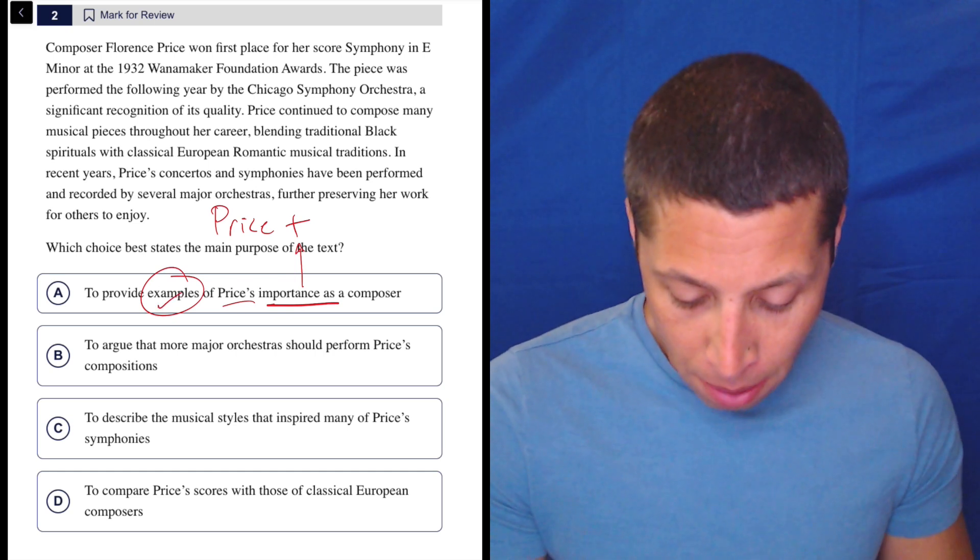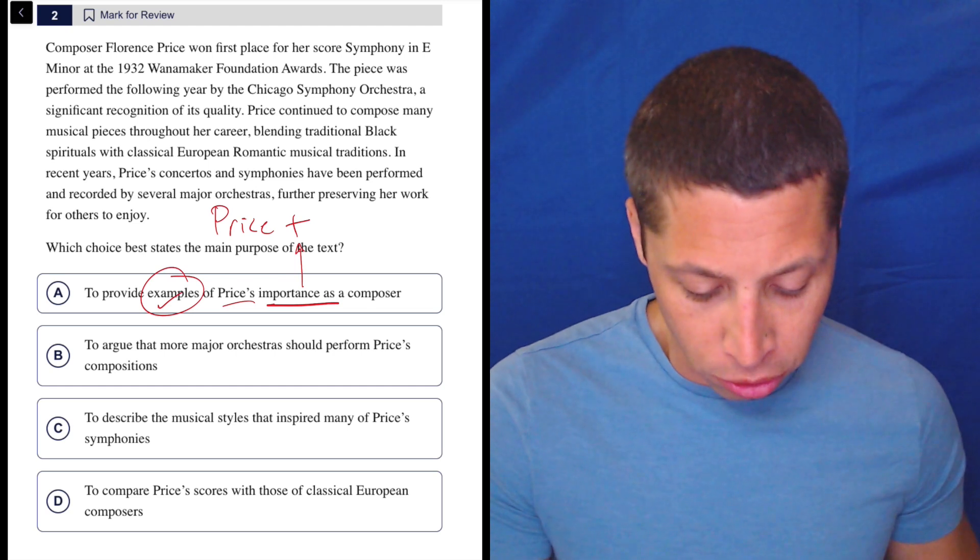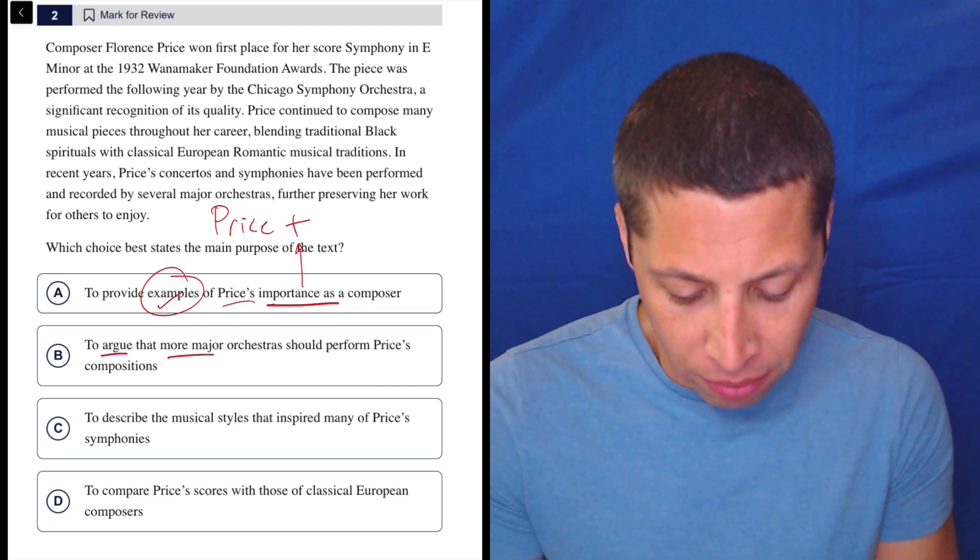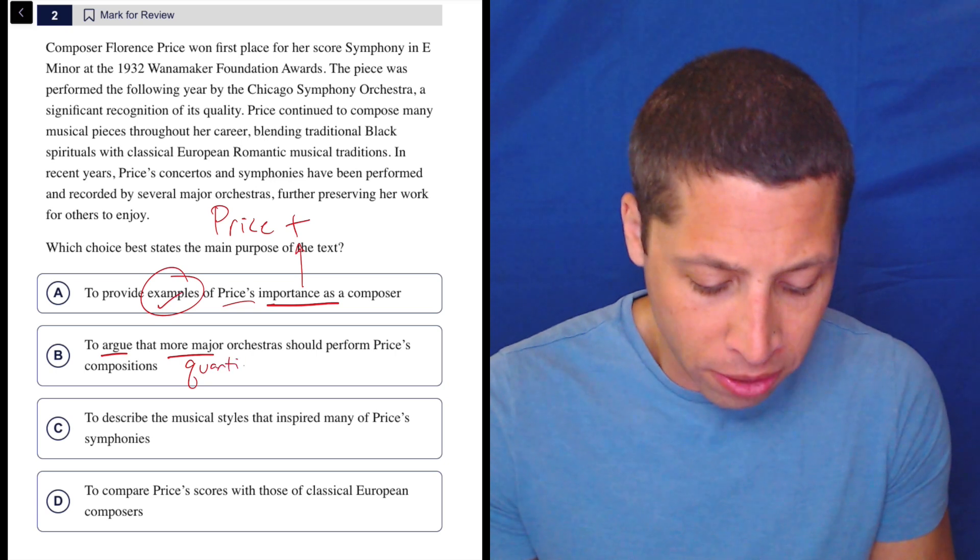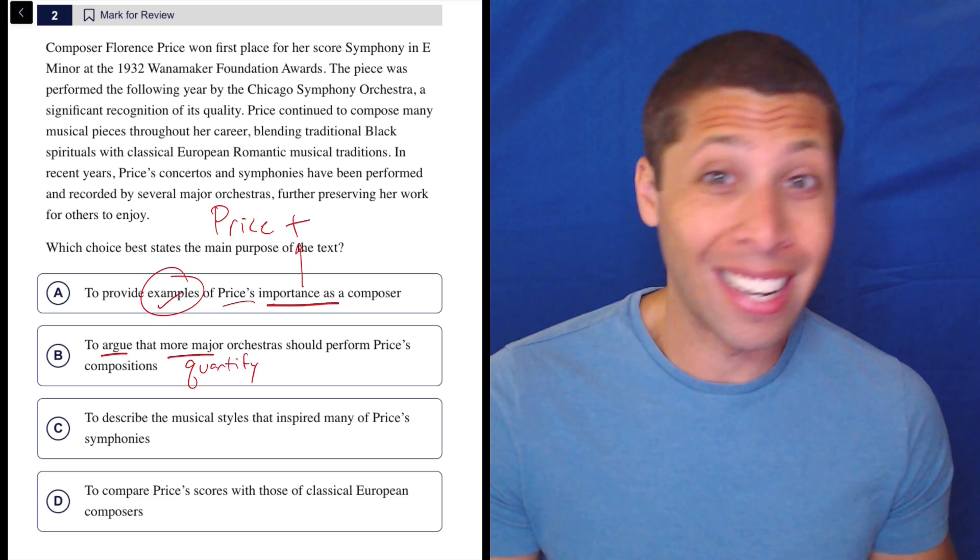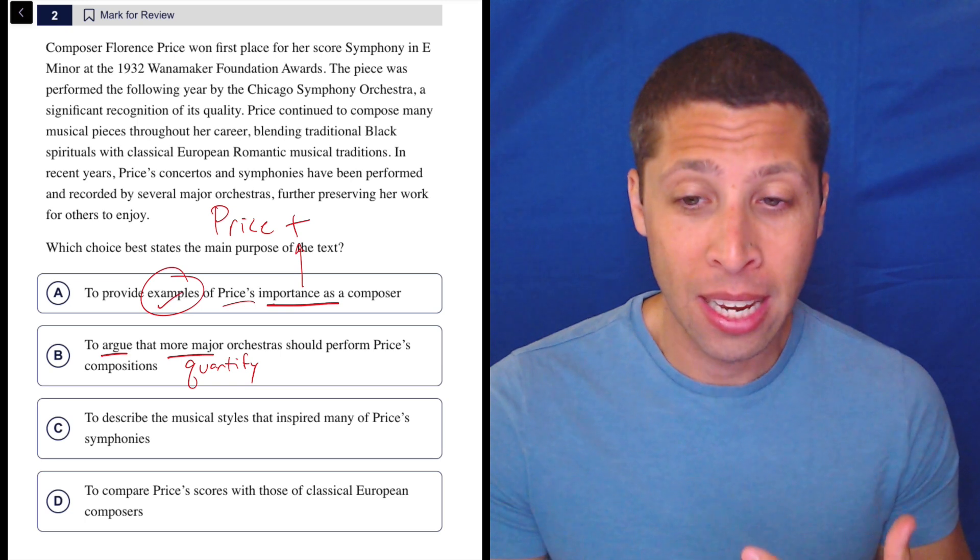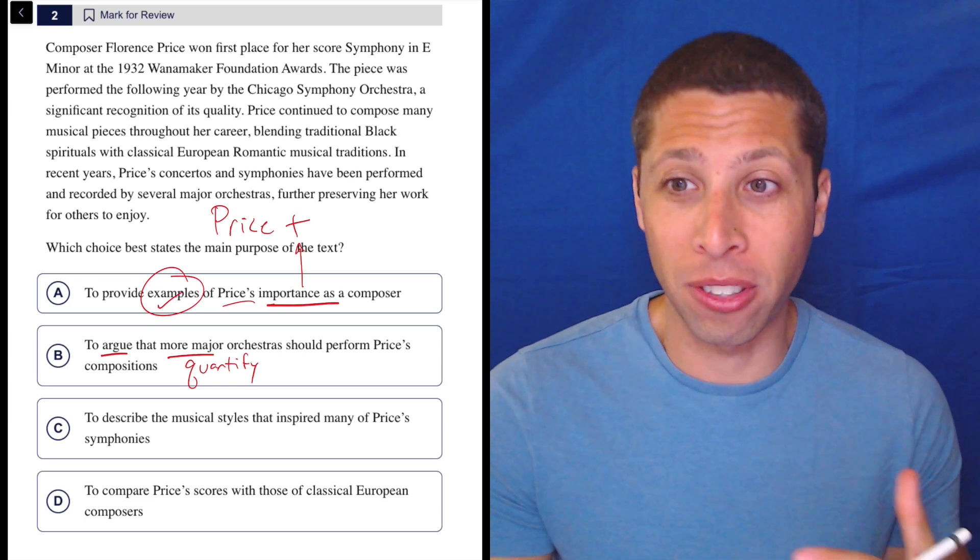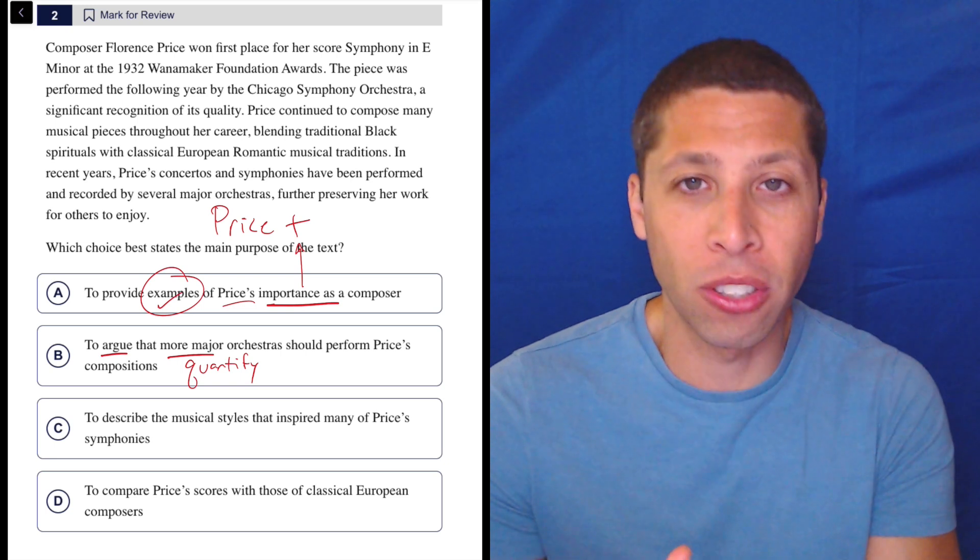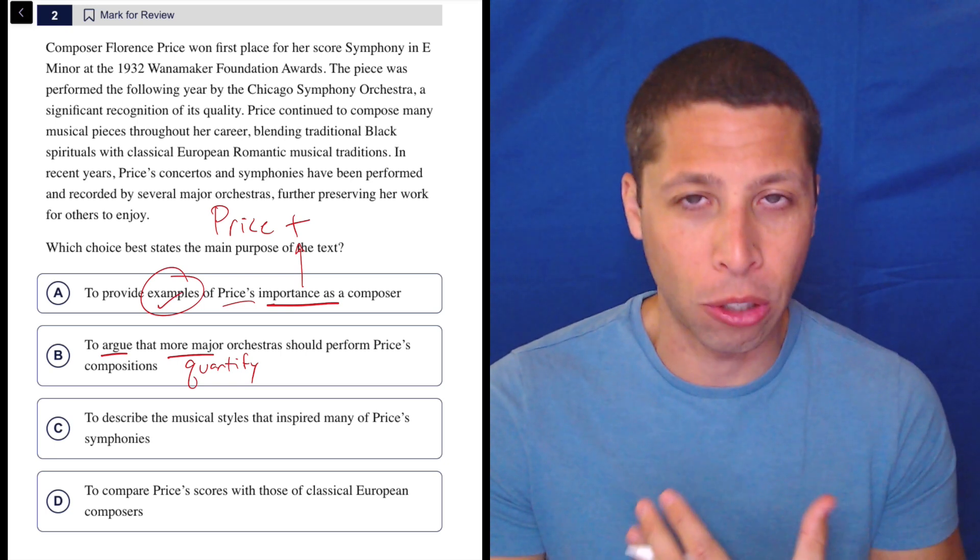B, to argue that more major orchestras should perform Price's compositions. It's not an argument. And here we have that classic kind of trap. We're quantifying something. More major orchestras. So do they talk about the number of orchestras that are performing things? No, this is purely about just this one person. It's also maybe switching the main character, right? It's about the person, Price, not about all these other orchestras and what they're doing. So this is kind of just missing the point.